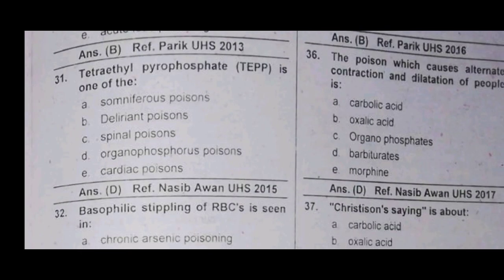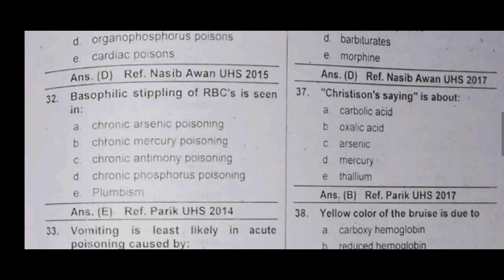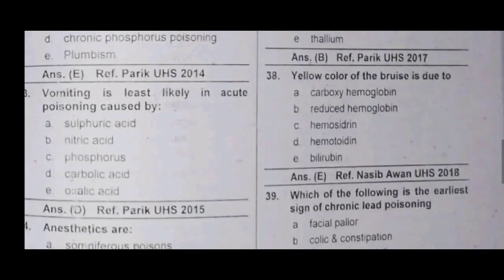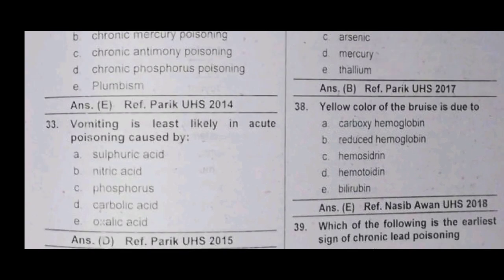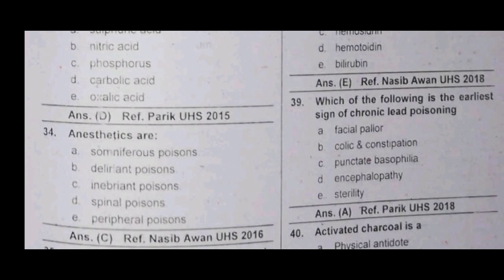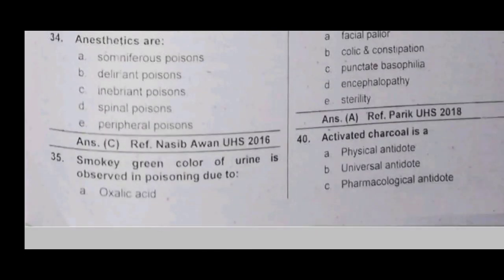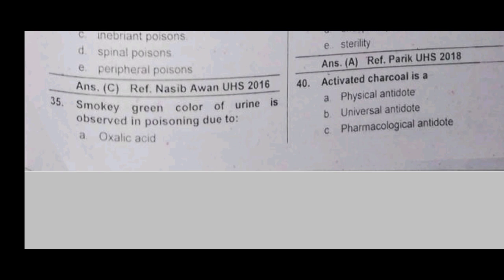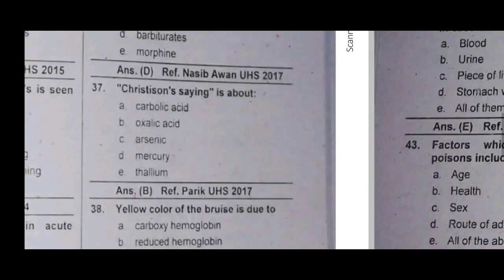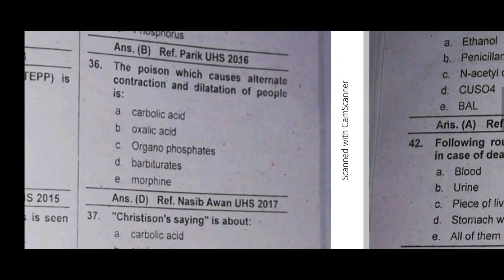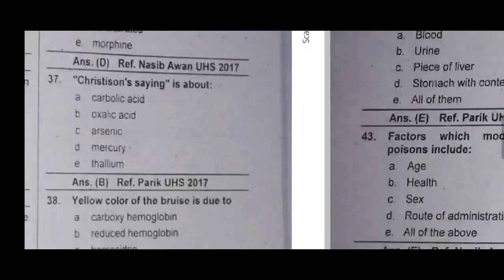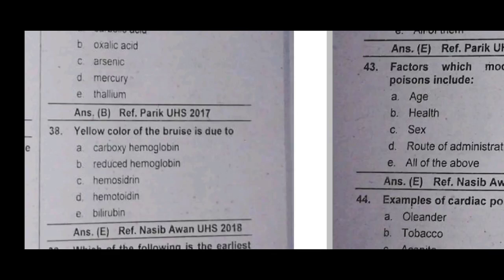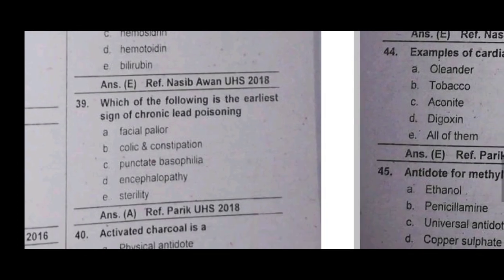Tetraethyl paraphosphate — stippling in chronic lead poisoning (plumbism). Vomiting is most likely in acute poisoning of carbolic acid. Inabrient poison like cocaine. Smoky green color urine is seen in carbolic acid poisoning. Yellow color of urine following a sign of chronic lead poisoning with facial pallor.